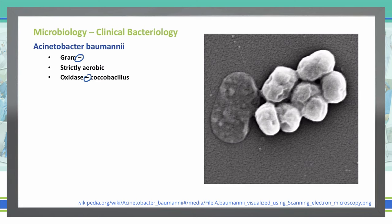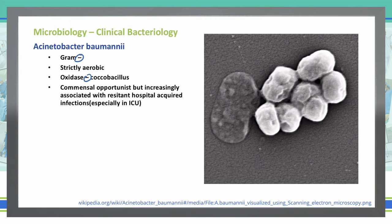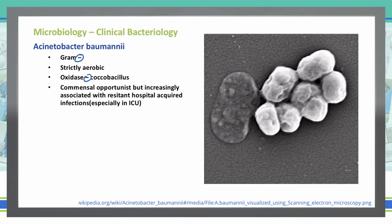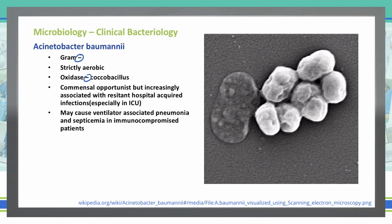A unique feature of this bacteria is that it is a commensal opportunist, but it is associated more often now with resistant hospital-acquired infections, especially in the ICU. A commensal bacteria is an organism that uses food from an internal or external environment of the host, but doesn't establish a close association with that host — it could feed on tissues without actually invading. The most common presentations are ventilator-associated pneumonia and septicemia, often in immunocompromised patients.